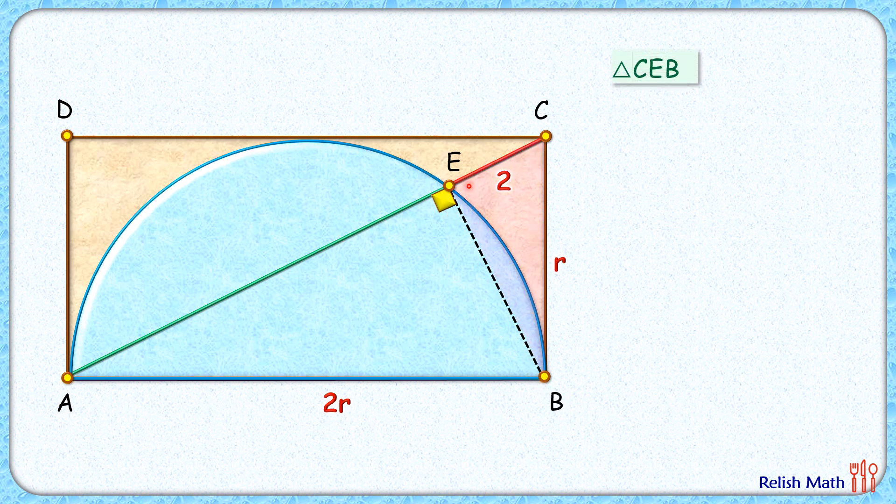We have one angle as 90 degrees and another angle is this green angle. How about this bigger triangle CBA? In this bigger triangle also, one angle is this green angle and another angle is 90 degrees.